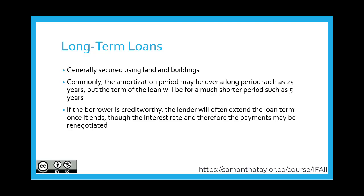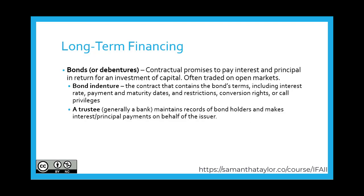Long-term loans are generally secured using land and buildings. Commonly, the amortization period is over a much longer period of time, such as 25 years, but the term of the loan could be for a much shorter period, such as five years. If the borrower is creditworthy, the lender will often extend the loan term once it ends, though the interest rate and therefore the payments may be renegotiated. Large companies can arrange directly to receive long-term loans from life insurance companies or pension funds.